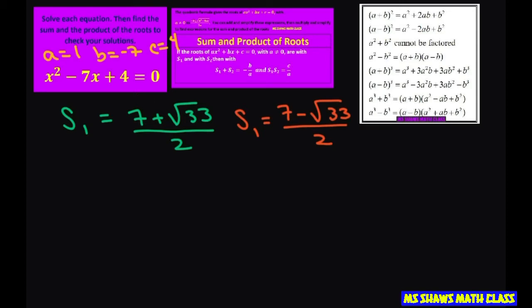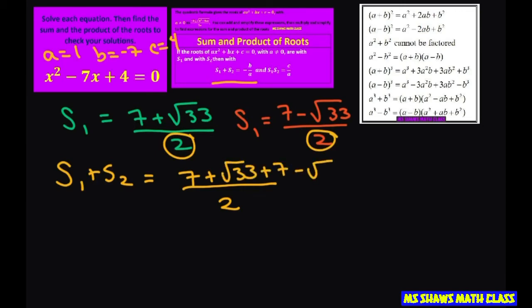add them up first. If you add them up, we have the same denominator, so just add this up. You get (7 + √33) + (7 - √33).